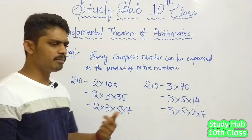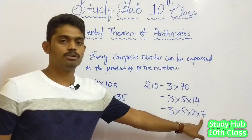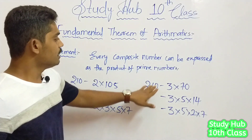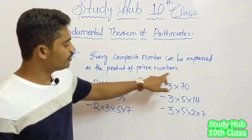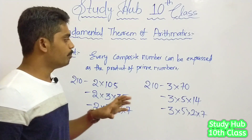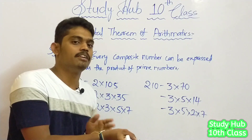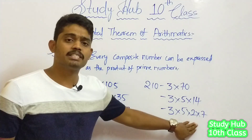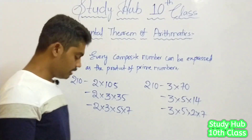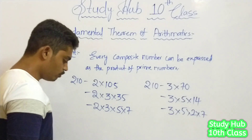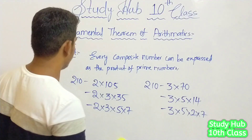Unique way means: whatever the primes we get here, we get here also. And it also says this representation in the form of prime numbers is unique. But the order of the prime numbers occurring can be different — like 2, 3, 5, 7 or 3, 5, 2, 7. I hope you have understood what the fundamental theorem of arithmetic is trying to tell.